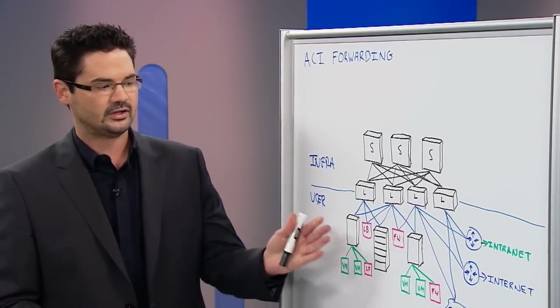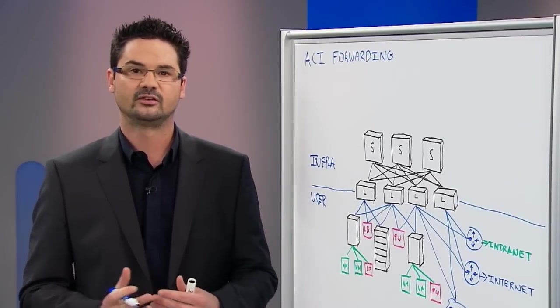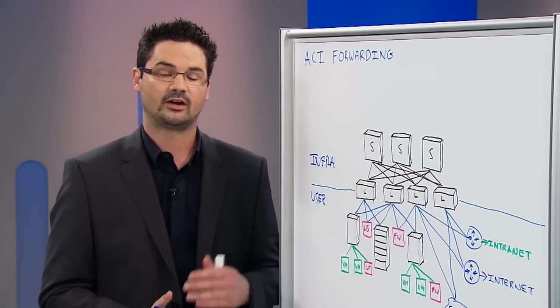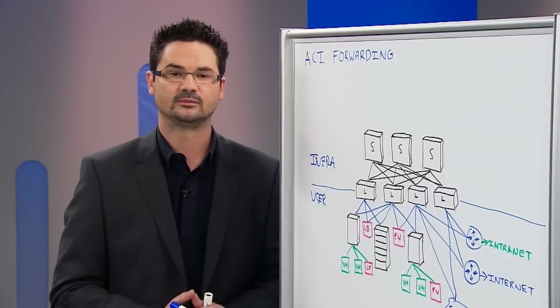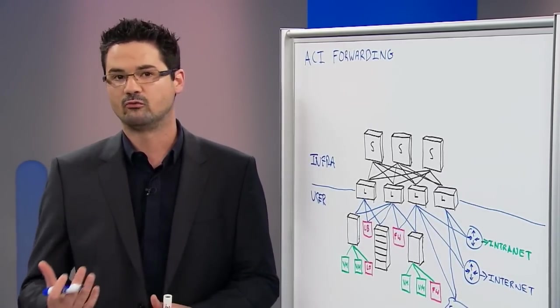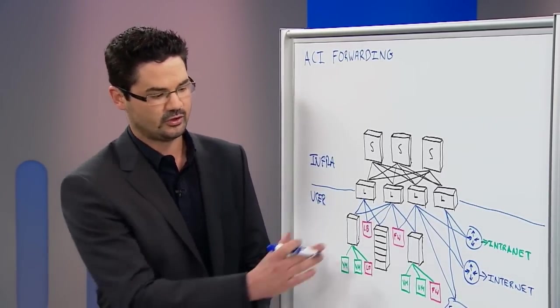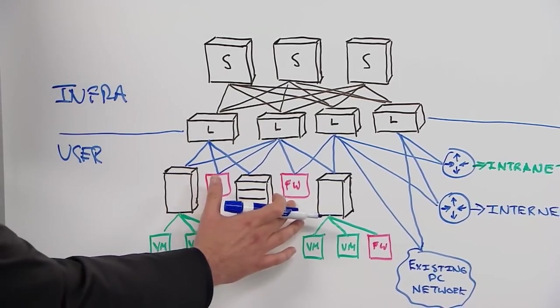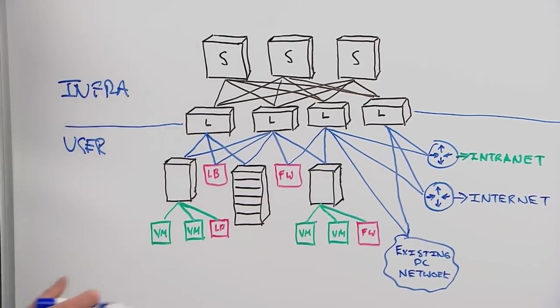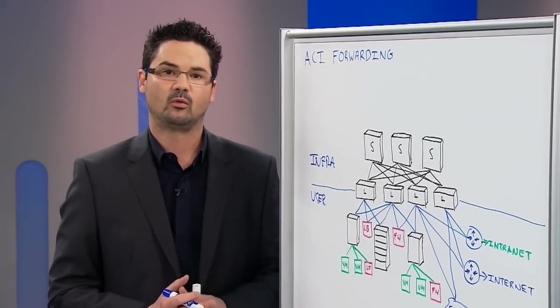Connected up at our leaves, you'll see that we have several things that would make sense at your access layer of your data center in a three-tier design, like our server ports and our server hosts for virtual machines. We also are going to connect up our service devices. Those could be virtual or physical service devices, shown here as load balancers and firewalls in a physical format or virtual format down here. And we also connect up our external networks.